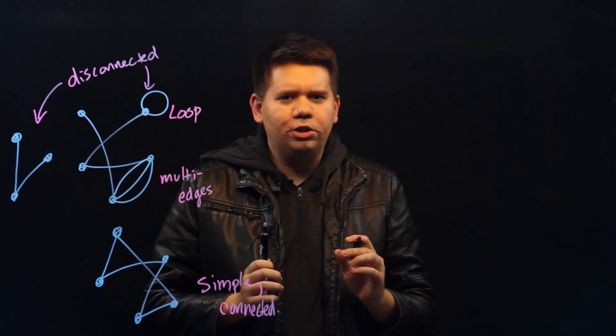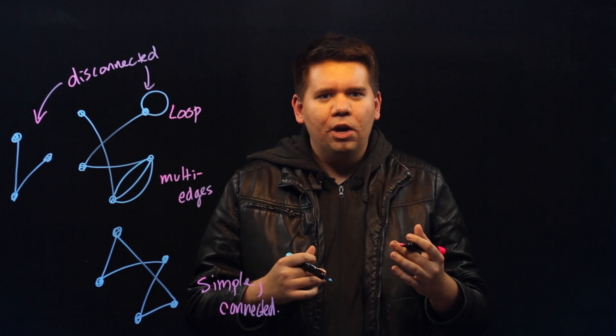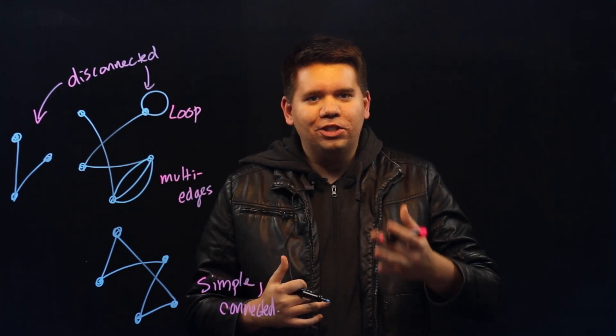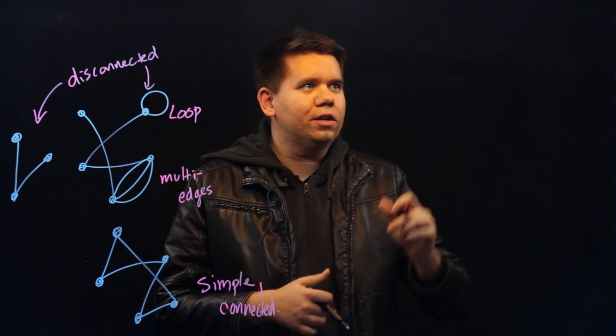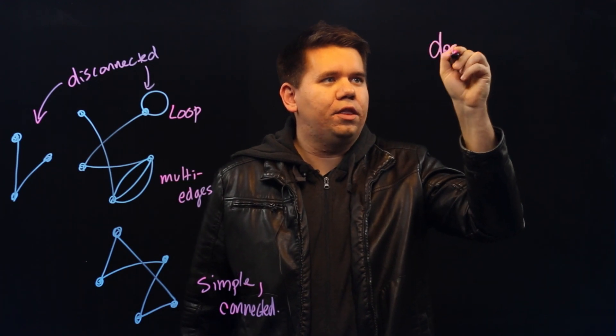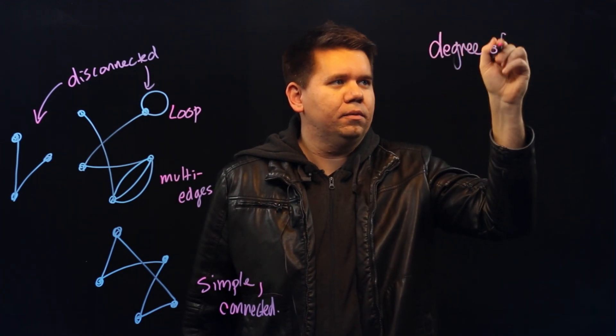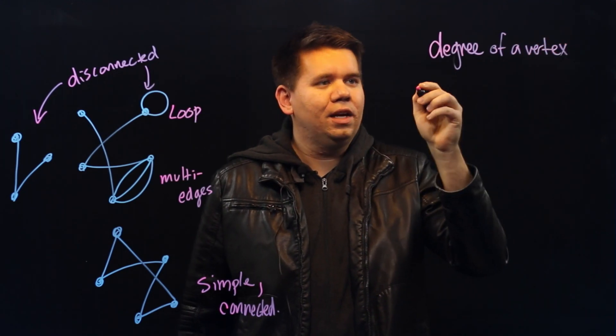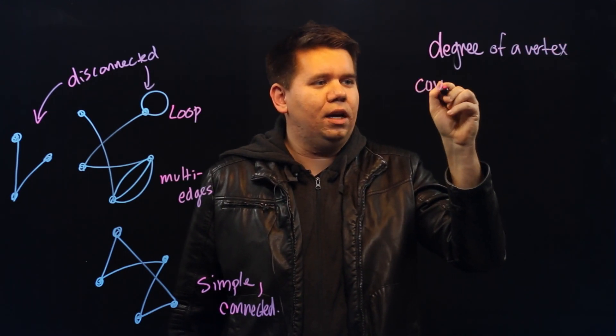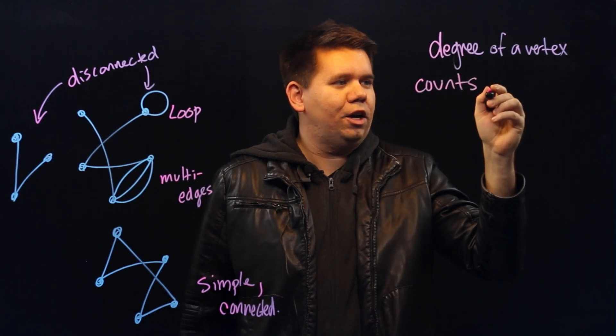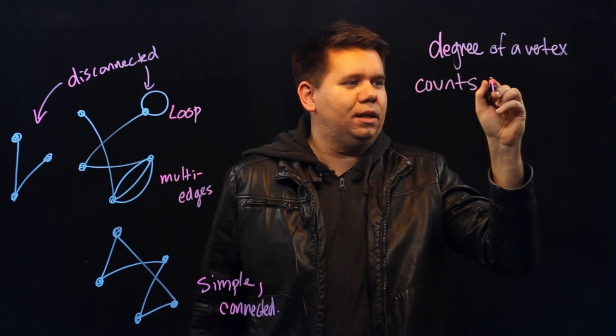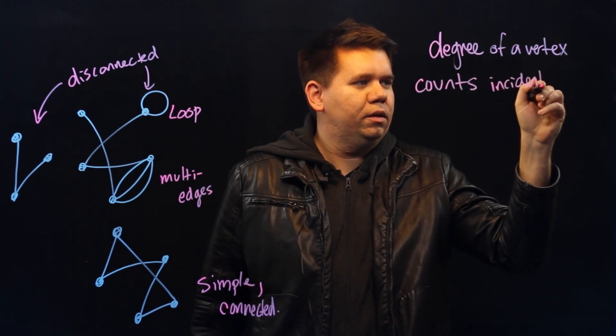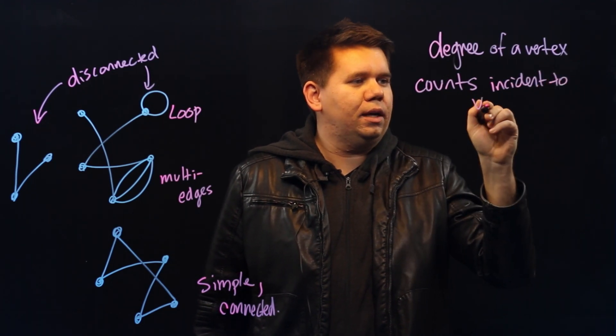Let's go back to our question of counting handshakes. We need some way to record the number of handshakes taking place. This would be called the degree. The degree of a vertex, for us, remember our vertices or our people, counts the number of edges that are adjacent or incident to the vertex.